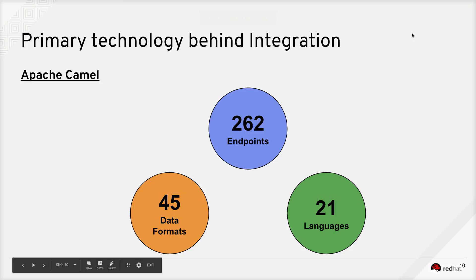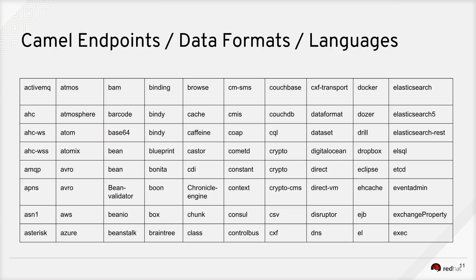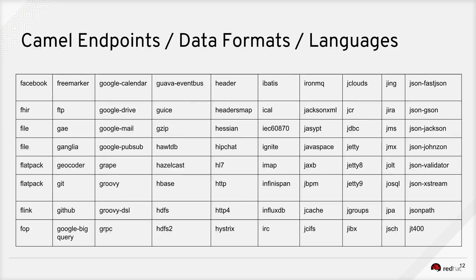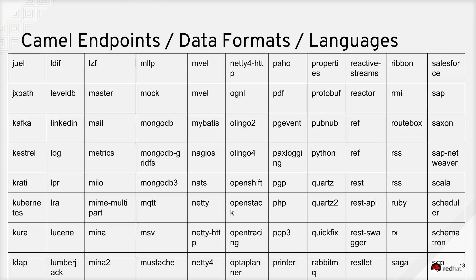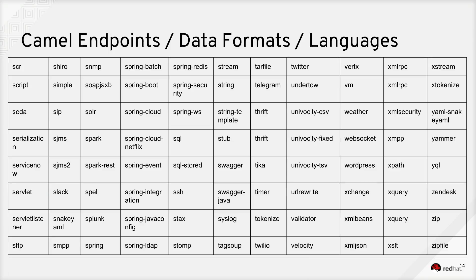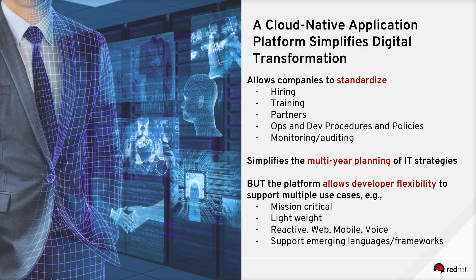When we talk about Apache Camel, as I showed you earlier in the developer studio, it comes with 262 endpoints as of version 7.1. It comes with support for 45 data formats and 21 languages. I'll be navigating through some of these endpoints, data formats, and languages that Apache Camel supports. This is an ever-growing list — as new technologies come in, more and more things will be added. This greatly simplifies your mechanism to do faster development.